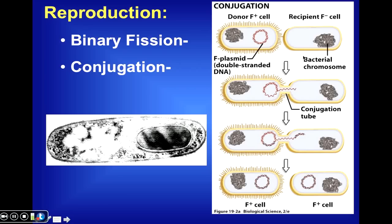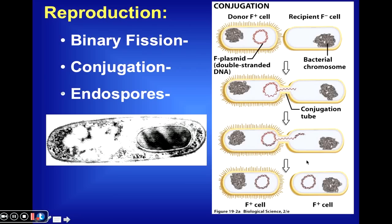We can also have the process of conjugation, whereby two cells come together and form a conjugation tube between them. During conjugation, the plasmid of one cell can be replicated and then donated to the adjacent cell.